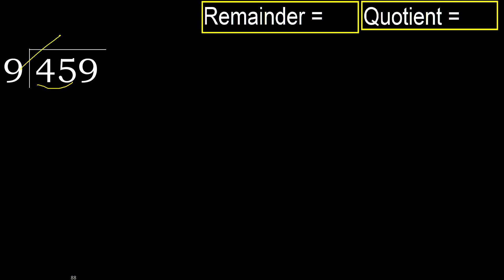9 multiplied by which number is nearest to 45 but not greater? 9 multiplied by 6 is 54, that is greater. Multiply by 5 — 45 is not greater, ok. Subtract 45 minus 45 equals 0, next.